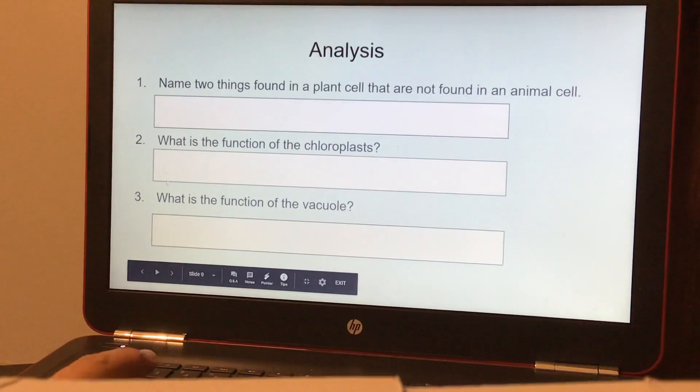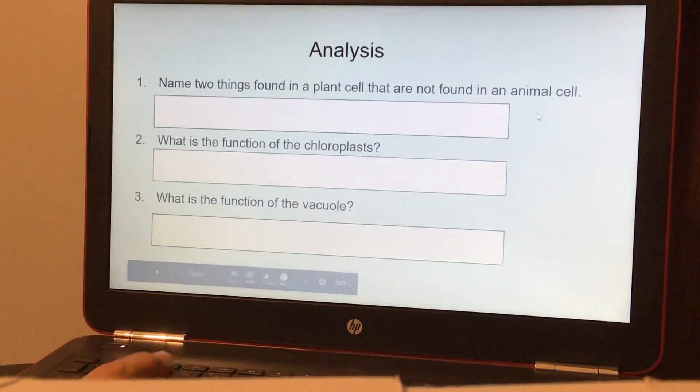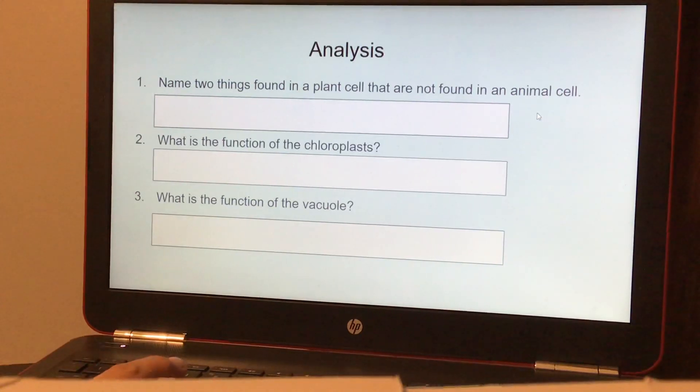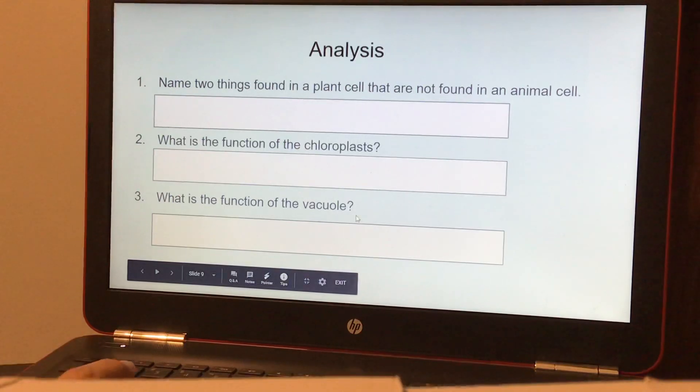Then you're going to answer these three questions. Name two things found in a plant cell that are not found in an animal cell, and it would be a chloroplast and cell wall. What is the function of the chloroplasts? And photosynthesis would be your answer. And what is the function of the vacuole? It stores water.